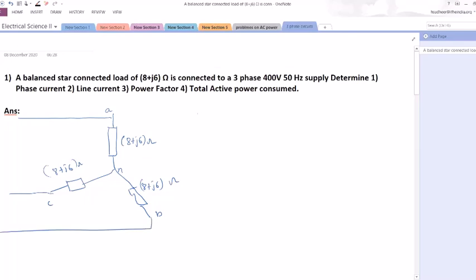So the Z per phase or impedance per phase is written as 8 plus j6 ohms. What does it mean? That means each phase having a load of resistance equal to 8 ohms and inductive reactance equal to 6 ohms. One element is resistance of 8 ohms and one inductance whose inductive reactance is 6 ohms. This is applied to a three phase 400 volts 50 hertz supply.